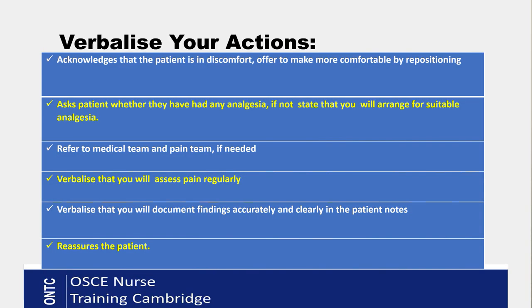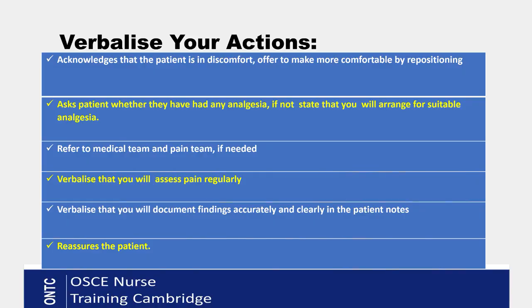The third action is to refer your patient to the medical team, as they need to know your patient is in a lot of pain. You can also think about a referral to the pain team. Next, verbalize that you will check your patient's pain regularly, because we need to know whether the medication is working, so regular reassessment is important. You will also document everything about the pain assessment clearly in the patient notes. Finally, make sure you reassure your patient that their pain will be managed with regular pain relief, as constant pain can be quite frightening.